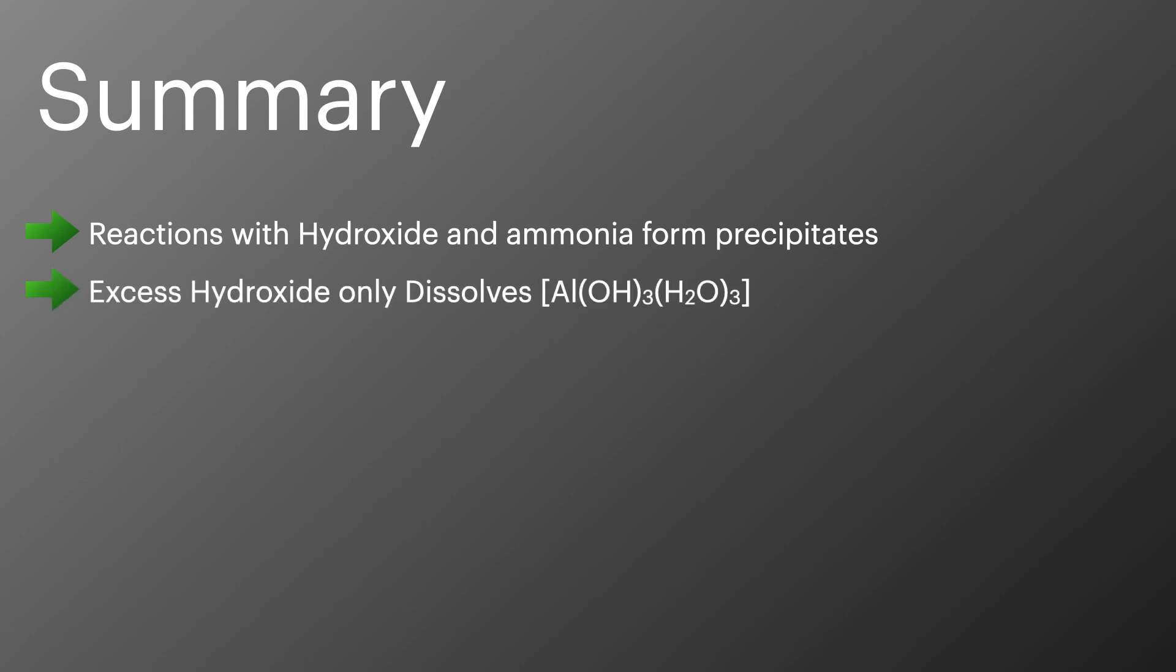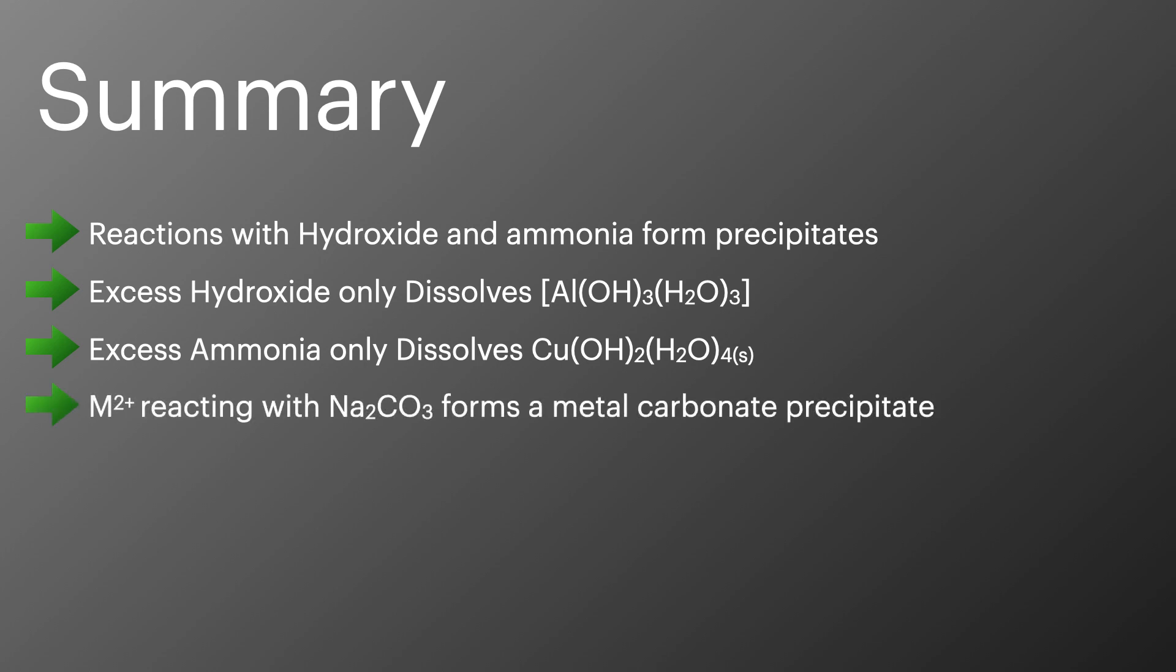To summarise what we've looked at in this episode: reactions with hydroxide and ammonia hydrolyse the complex to form a precipitate. Excess hydroxide reacts with aluminium hydroxide as it's amphoteric. Excess ammonia dissolves the copper hydroxide to form a deep blue solution. Two plus metal ions are weaker acids and they form a metal carbonate precipitate when reacting with sodium carbonate. And three plus metal ions are stronger acids and they form hydroxide precipitates with bubbles of carbon dioxide when they react with sodium carbonate.